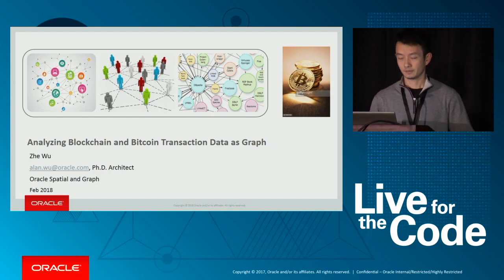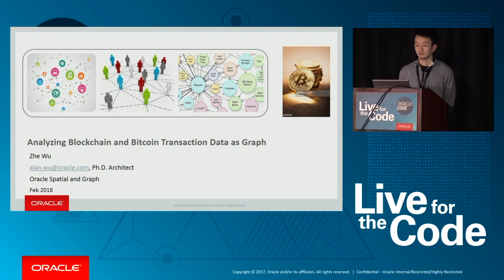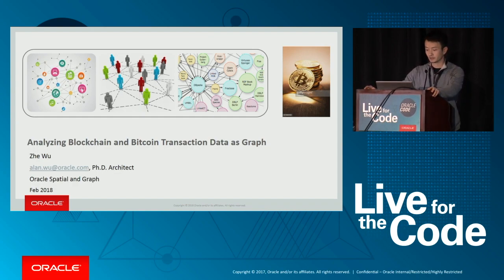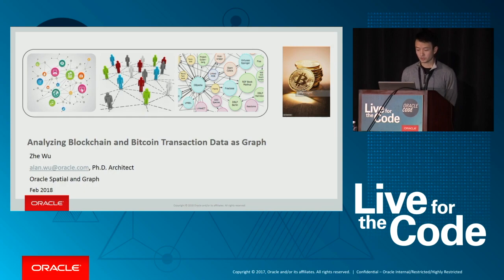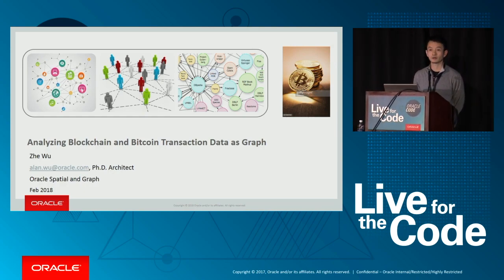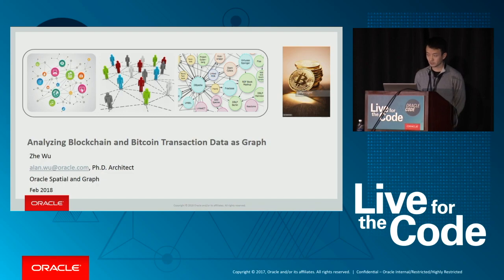I'm going to talk about analyzing blockchain and Bitcoin transaction data as a graph. Let me introduce myself quickly. My name is Ze Wu. I am an architect in Oracle Database organization, in a team called Oracle Spatial and Graph.